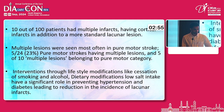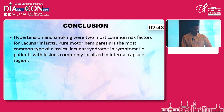Interventions through lifestyle modification — including cessation of smoking and alcohol and dietary modifications such as low salt intake — have a significant role in preventing hypertension and diabetes, which can lead to a reduction in the incidence of lacunar infarcts. Hypertension, smoking, and diabetes were the three most common risk factors. Pure motor hemiparesis is the most common type of symptomatic lacunar syndrome, with lesions most commonly localized to the internal capsule.